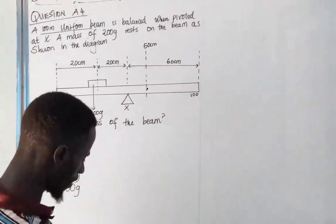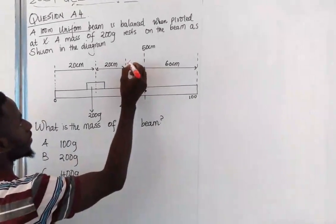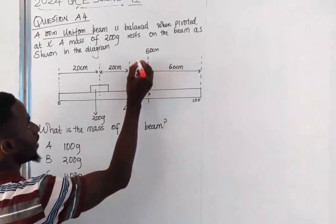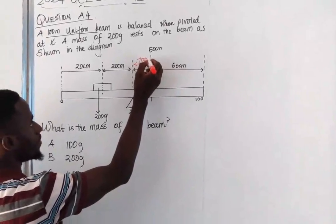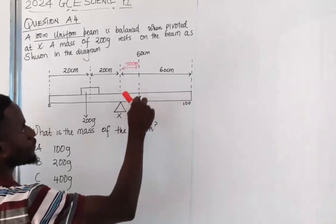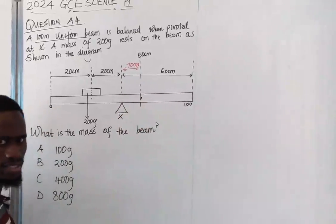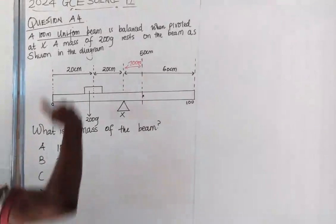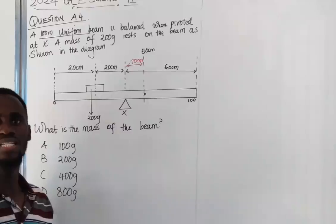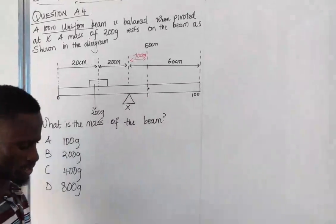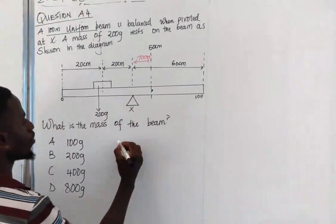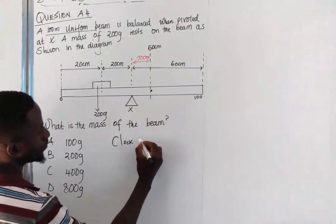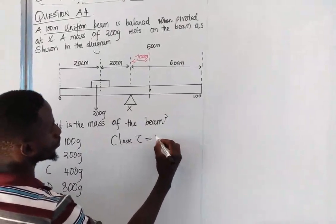That means this distance here is 10 centimeters if from here to there is 60. So now, ladies and gentlemen, the question is even done. We are going to get clockwise moments equal to anticlockwise moments. So clockwise moments is equal to anticlockwise moments.